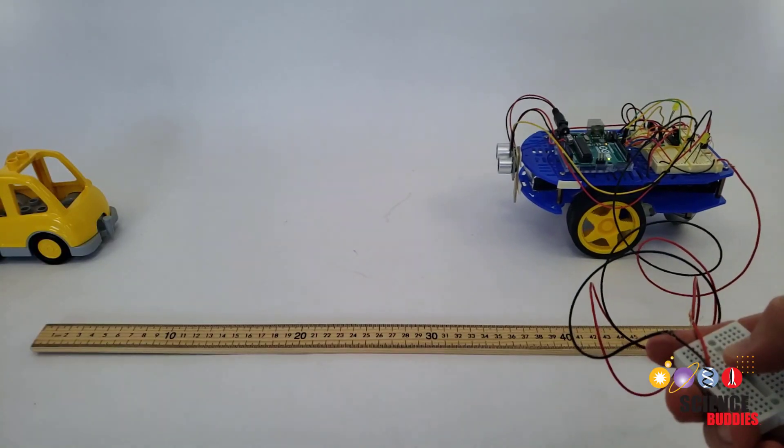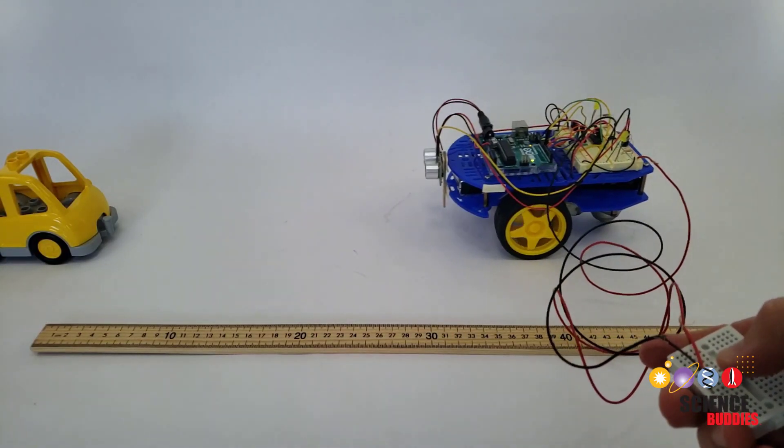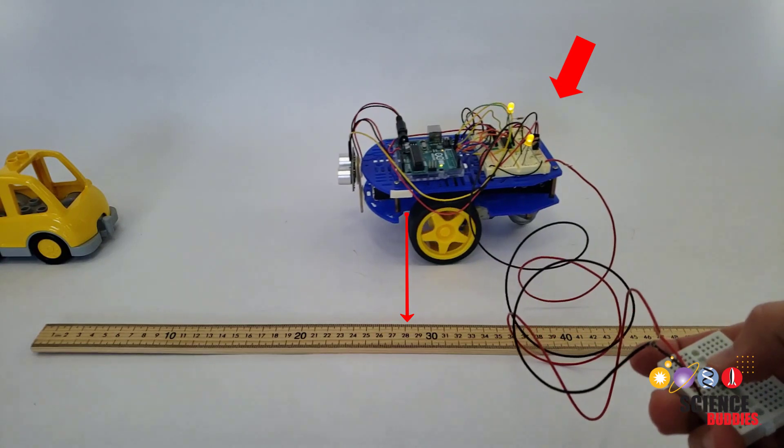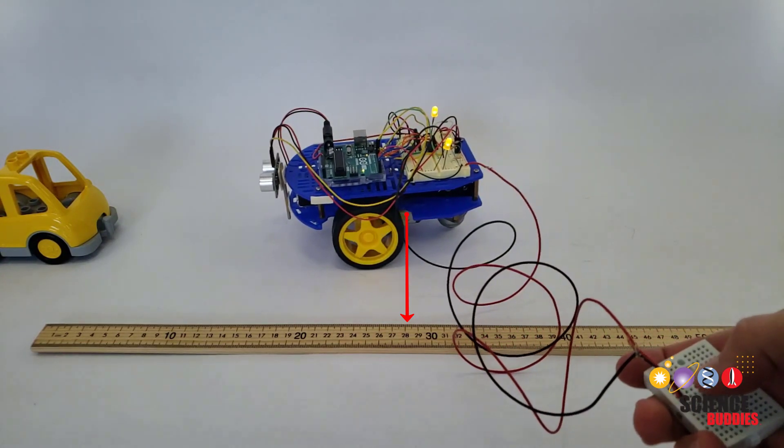You can set up an experiment and even film your robot to measure the difference between when the robot first detects the obstacle and when it actually comes to a complete stop.